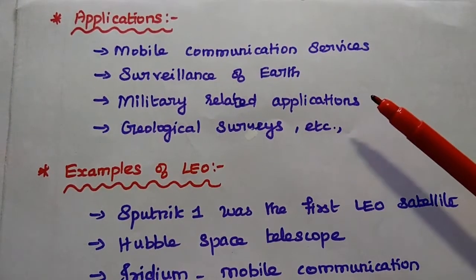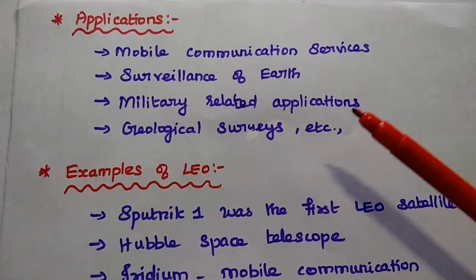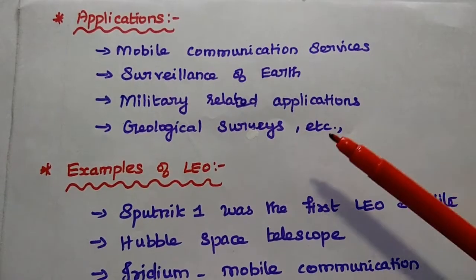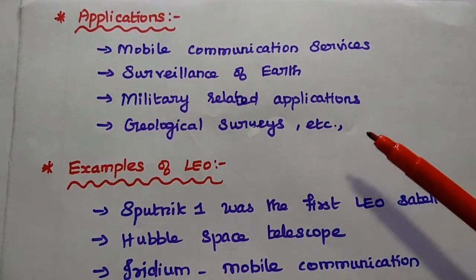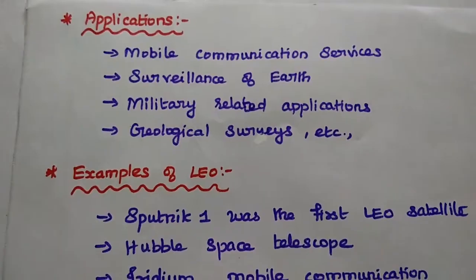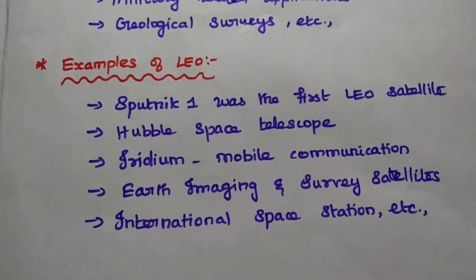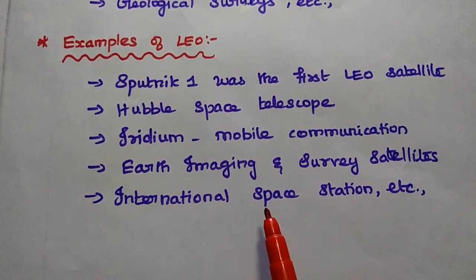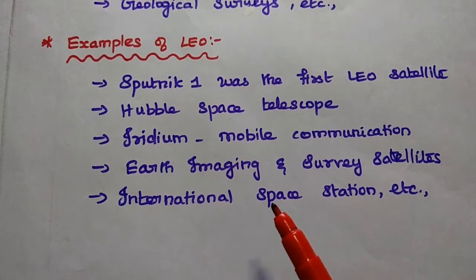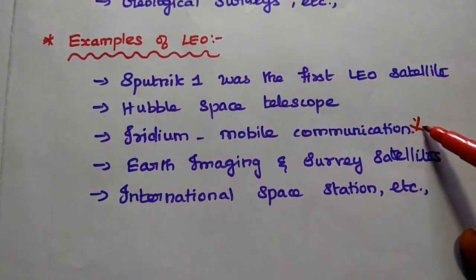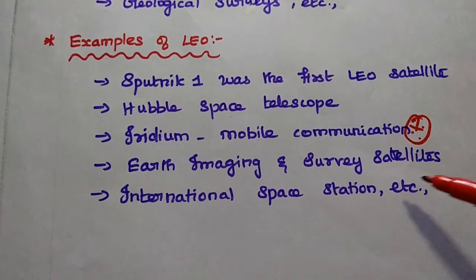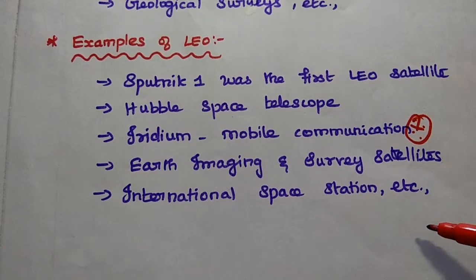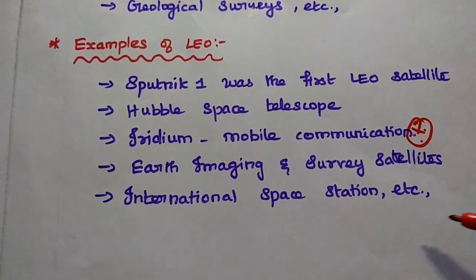Applications of LEO satellites: they are widely used for mobile communication services, surveillance of earth, military related applications, and geological services. Examples of LEO satellites include Sputnik, which was the first LEO satellite, Hubble Space Telescope, Iridium — which is widely used for mobile communication service — Earth Imaging and Survey Satellites, and the International Space Station, which is also located in low earth orbit.